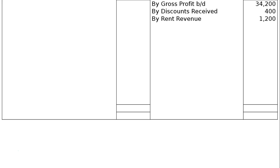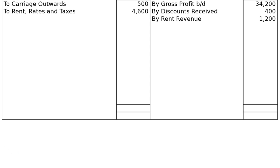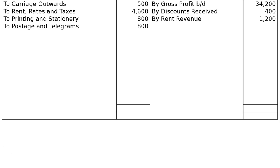Since rent revenue is an income account, it goes on the credit side. On the debit side of the profit and loss account, carriage outwards is rupees 500, then rent, rates and taxes rupees 4,600, printing and stationery rupees 800, and postage and telegrams rupees 800.